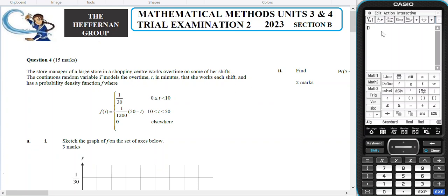So I'm going to define a hybrid function on my calculator. I'm going to go to Math 3 and bring up the hybrid function. I'm not going to do the zero. So I've got 1 divided by 30, and that's for the domain which is 0 inclusive x not inclusive of 10. And the second one is 1 divided by 1200, bracket 50 minus x, and that's going to be from 10 inclusive x inclusive up to 50.